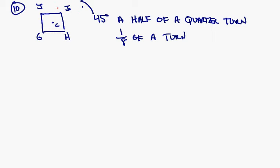So basically what's going to happen is I is going to rotate to this point, J is going to rotate to this point, G is going to rotate to this point, and H is going to rotate to this point.